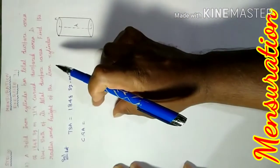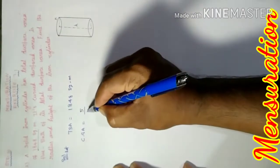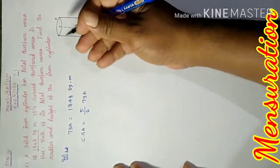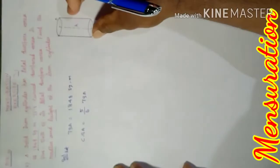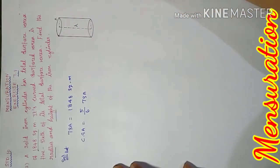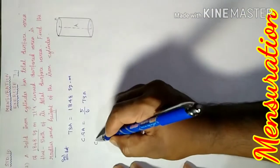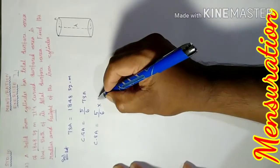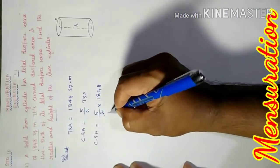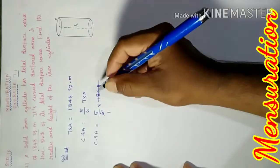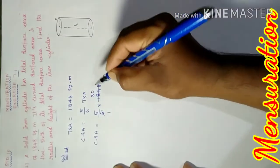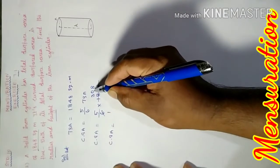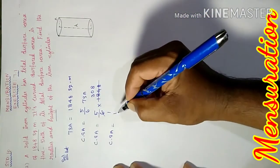The curved surface area is equal to 5/6 of the total surface area, which is 5/6 of 1848. Therefore, the CSA value is equal to 5 times 1848 divided by 6, giving us CSA equal to 1540 square meters.